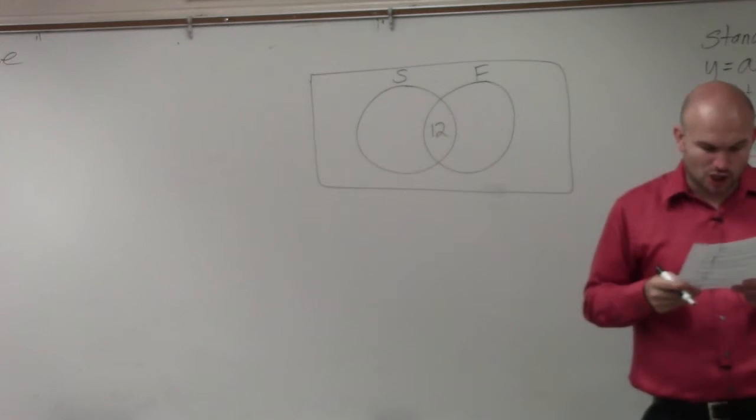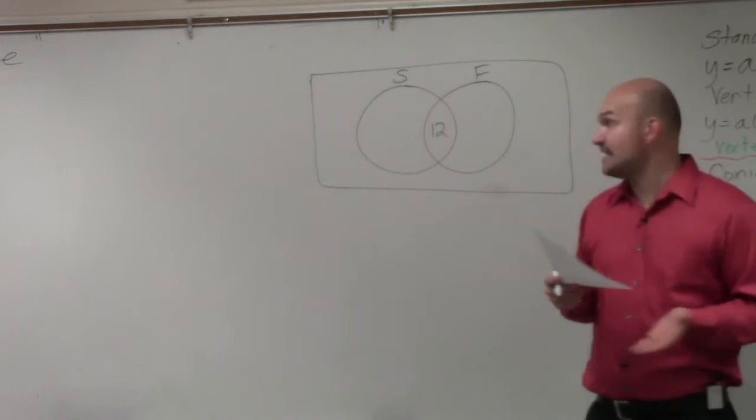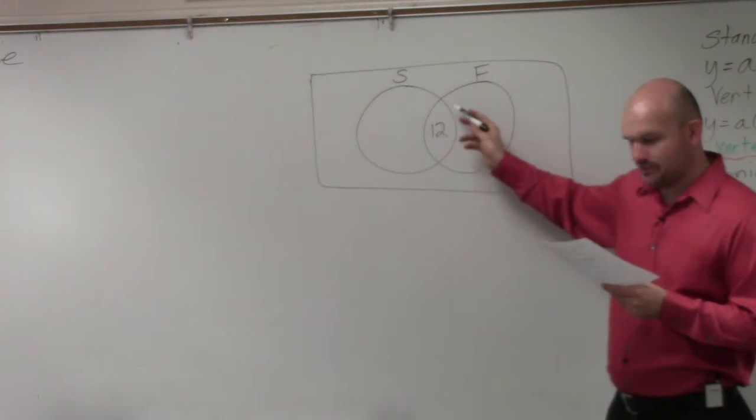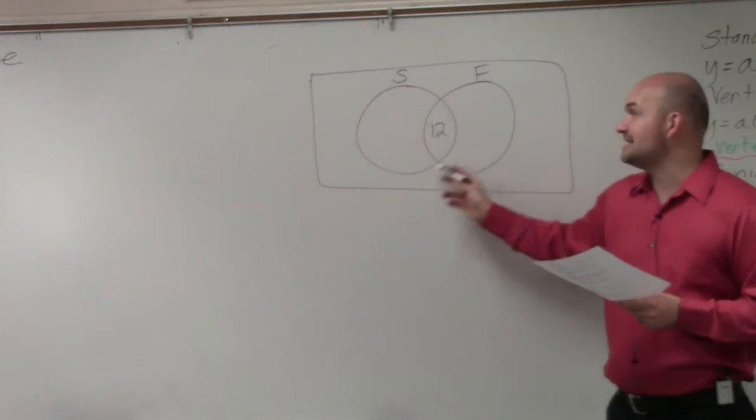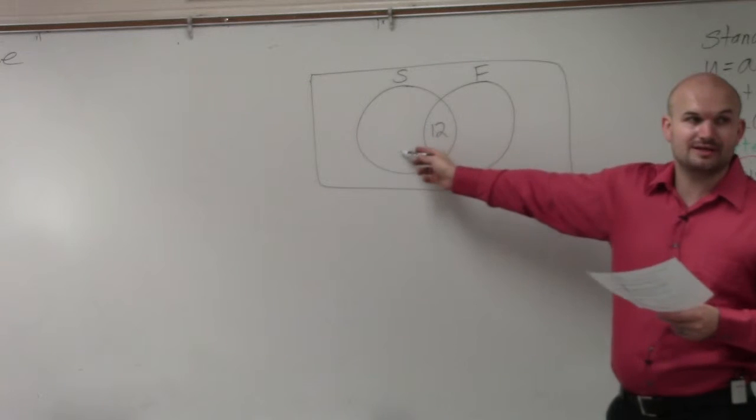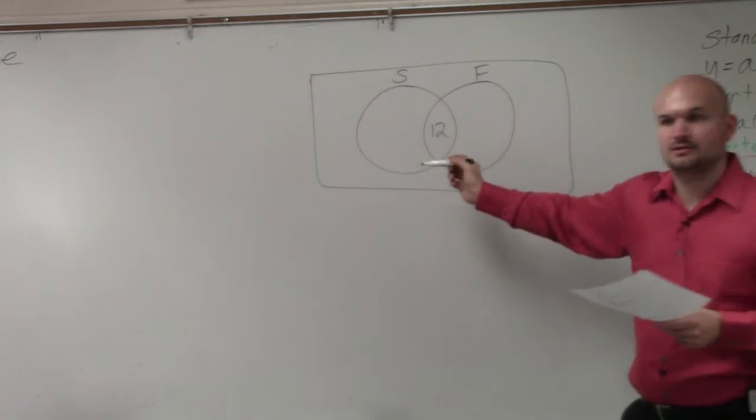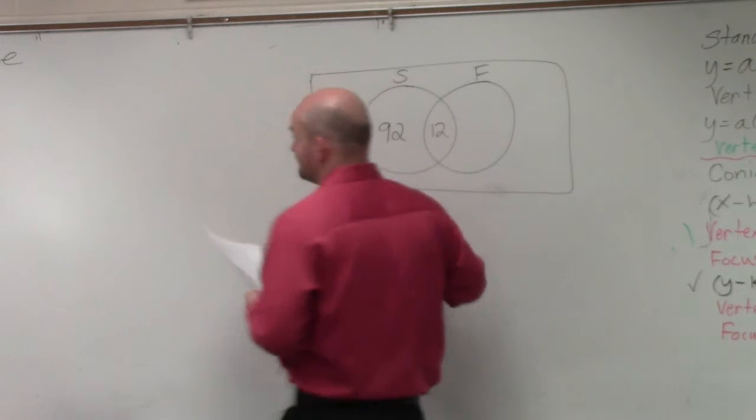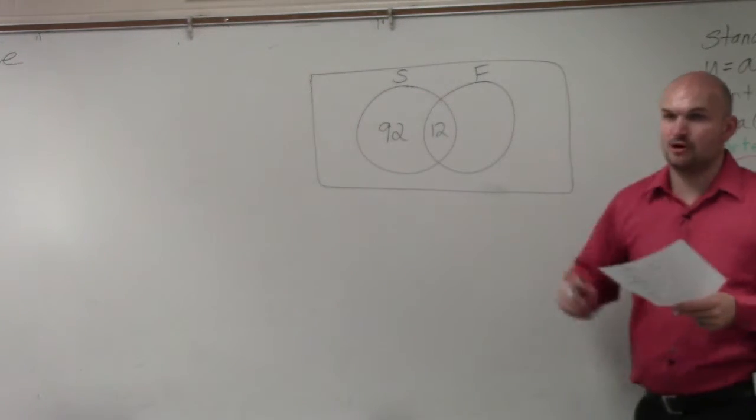So therefore, it says 104 study Spanish. So therefore, this whole circle needs to add to 104. Well, if there's already 12 in there, how many more do I need to have on the other side? 92. 92, because 92 plus 12 equals 104.